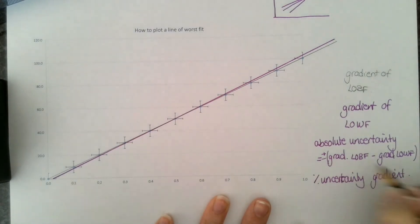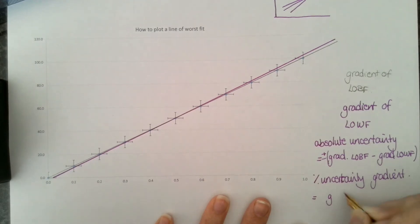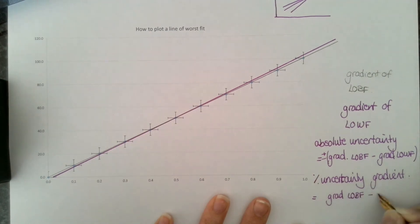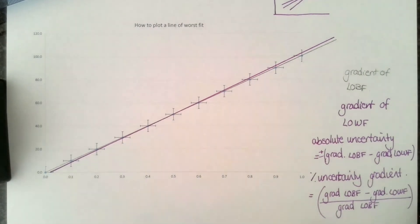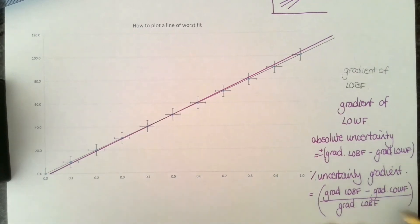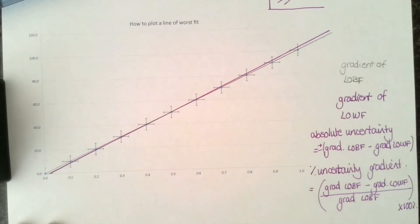To do that, the percentage uncertainty equals the difference in the gradient of the line of best fit and the gradient of the line of worst fit, divided by the gradient of the line of best fit. It's a percentage of that actual value. Then we multiply that by 100% to get the value.